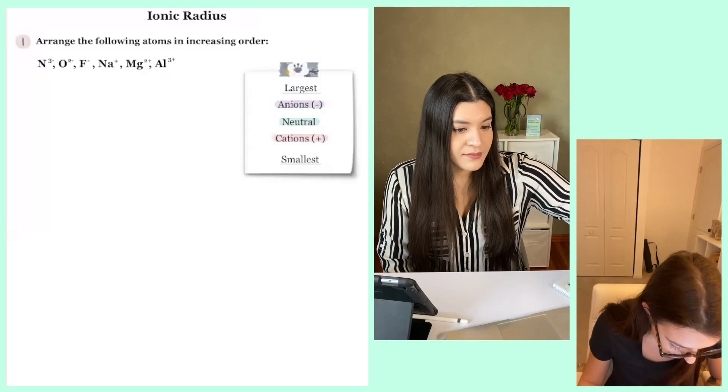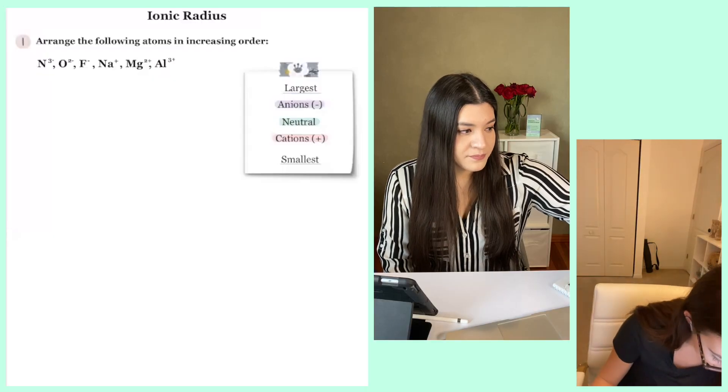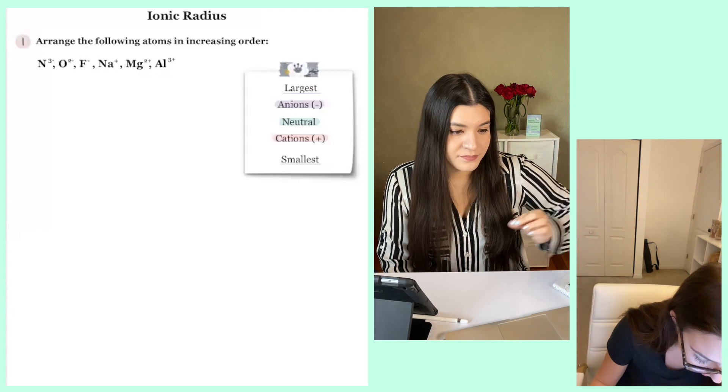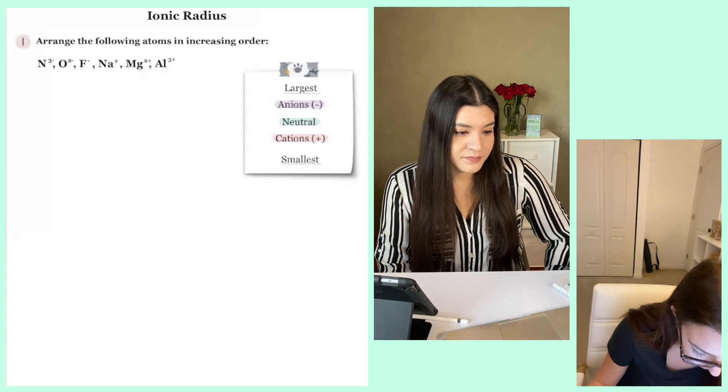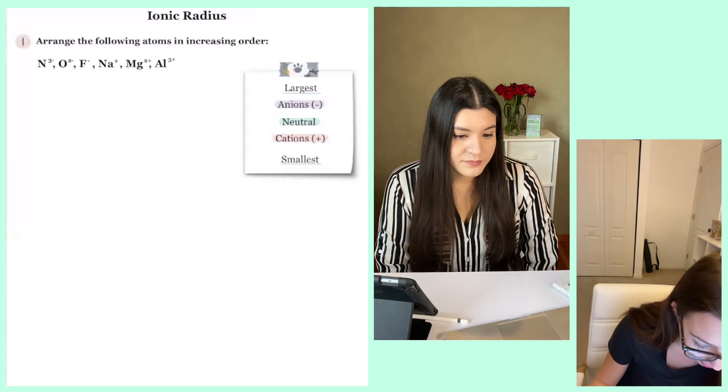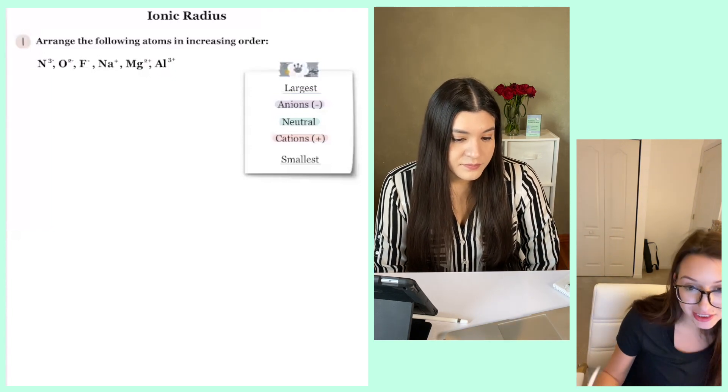We just went over a lot of information, but the best way to make sure that you actually got it down in your brain is by practicing everything out. So the first step is we're going to write out exactly the number of electrons.